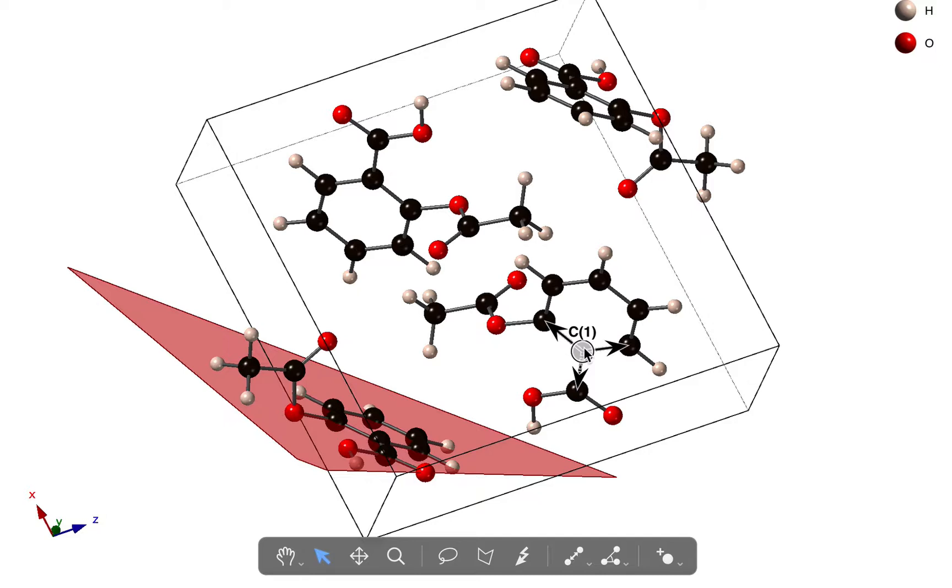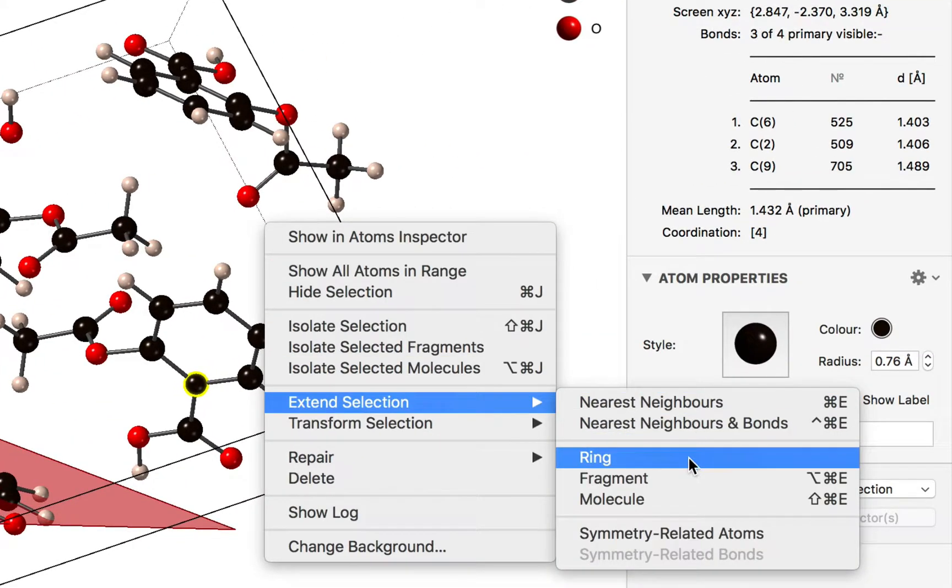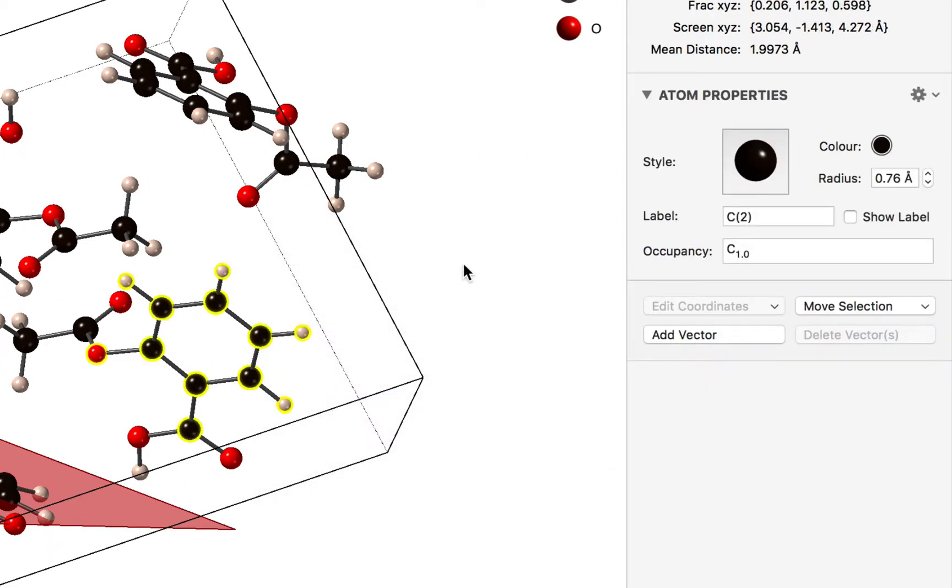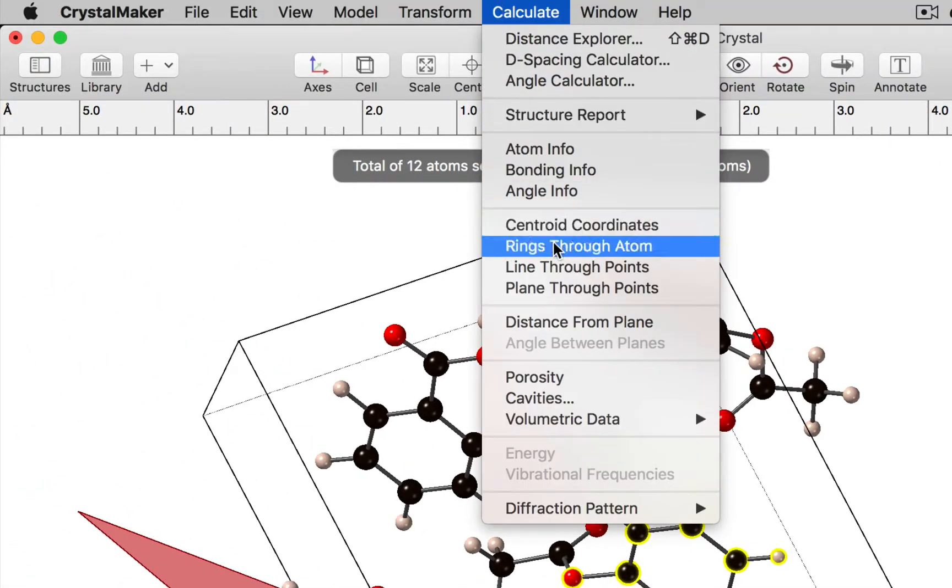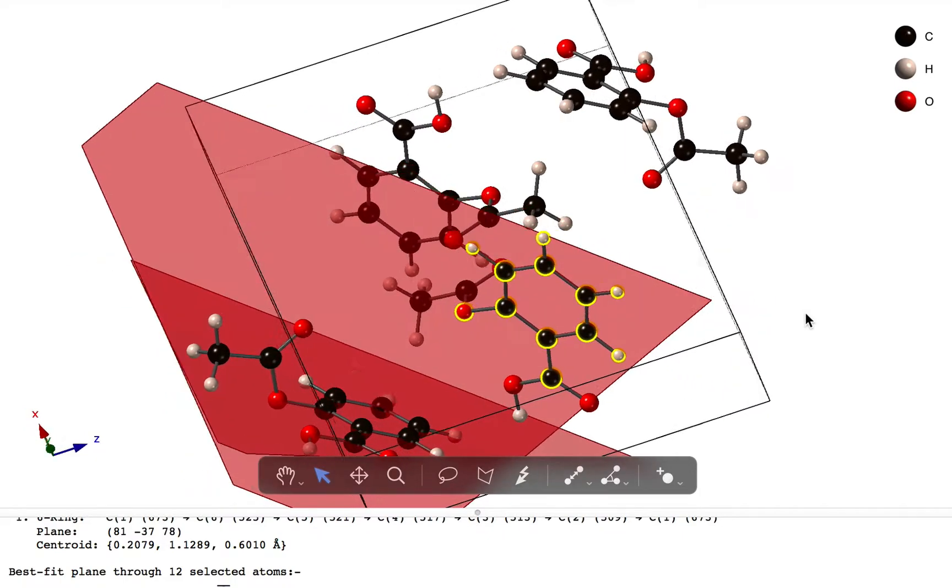So we're going to do the same things as before. Select a ring, we'll extend the selection to the neighbors, and we'll calculate the best fit plane through those points. Here we have that plane.